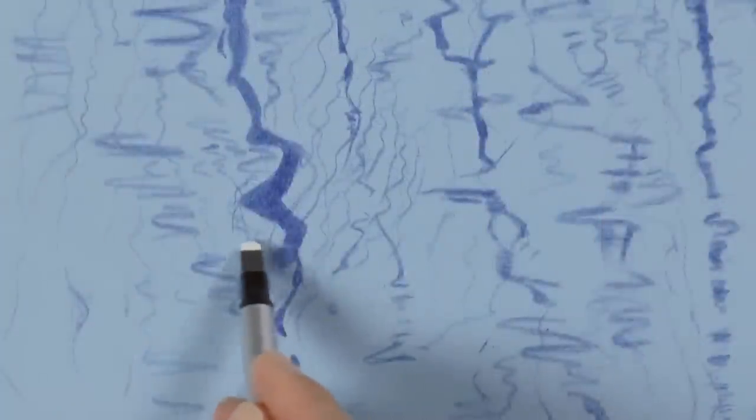With an eraser we can lighten up some parts of some branches, so that they look also like waves. And we reinforce with the pencil.